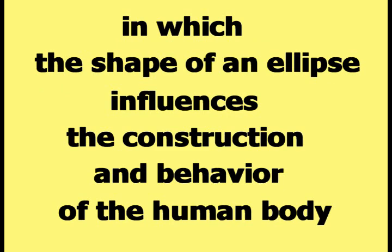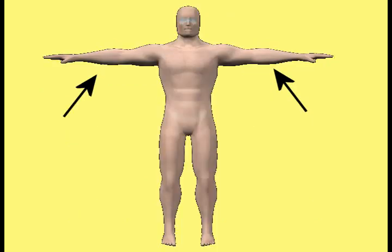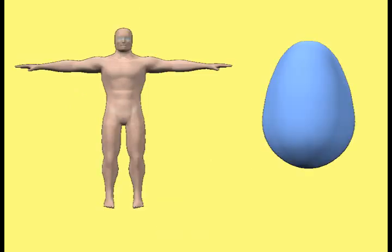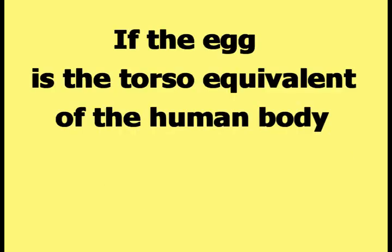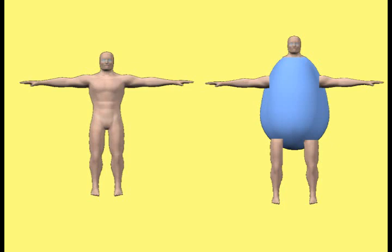The demonstration of this particular way in which the shape of an ellipse influences the construction and behavior of the human body requires the construction of a human body out of an egg. A human body has two arms, two legs, and a head extending out from the torso. The egg will represent the torso of the human body, so it needs two arm equivalents, two leg equivalents, and a head equivalent before it would look like a human body.